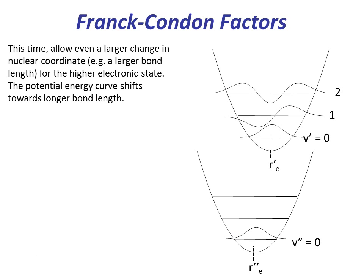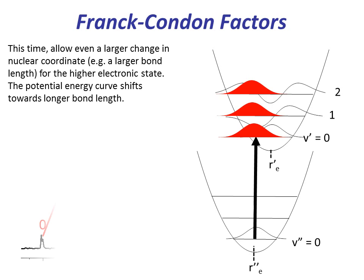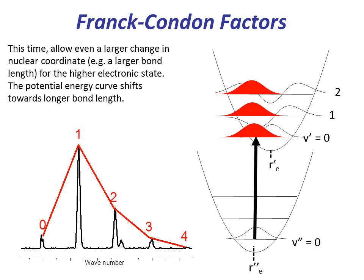Now, allow an even larger change in nuclear coordinate — that is, a larger bond length for the higher electronic state. The potential energy curve shifts more towards the right. Here we see that the overlap between vibrational wave function v double prime equal to zero and the vibrational wave function of the electronic excited state v prime equal to one is even larger, and as a result, peak one increases. The overlap between v double prime equal to zero and v prime equal to zero keeps on decreasing as the potential energy curve shifts more towards the longer bond length, and peak zero diminishes as a result.